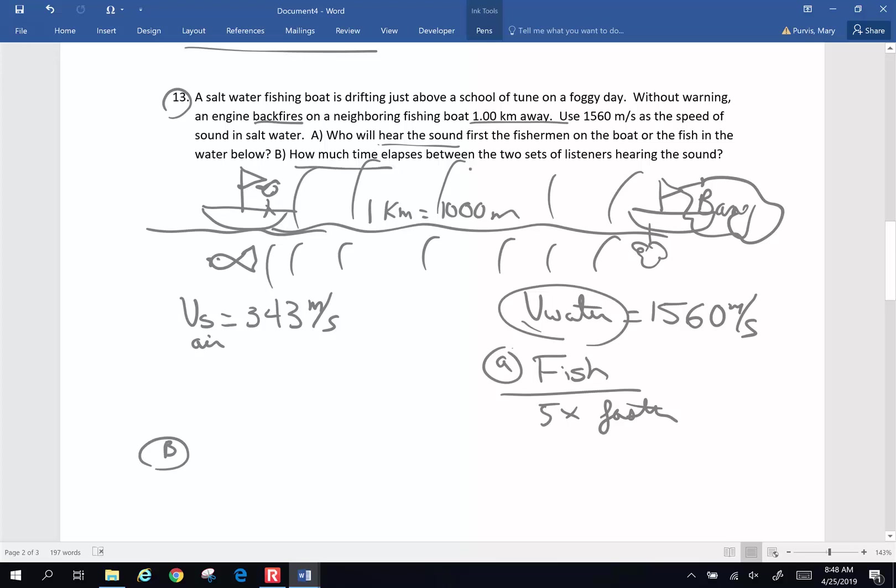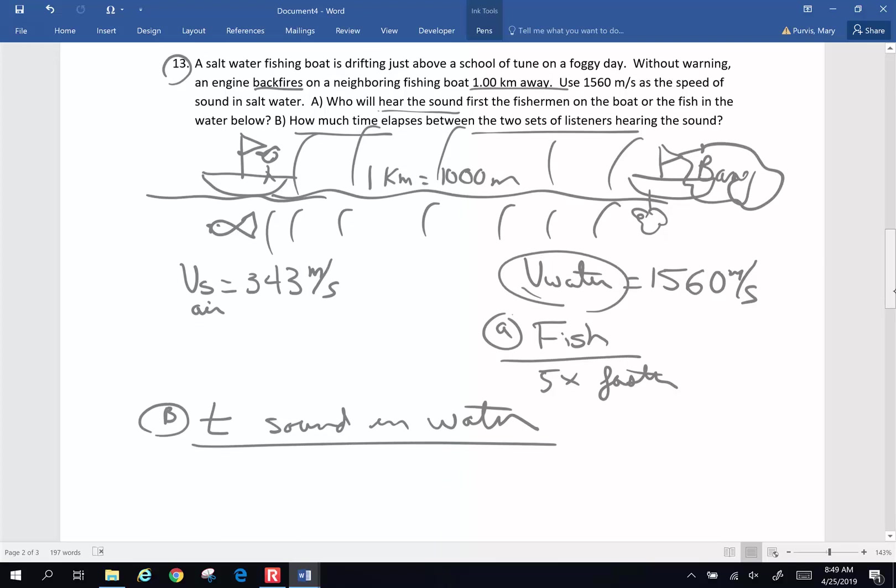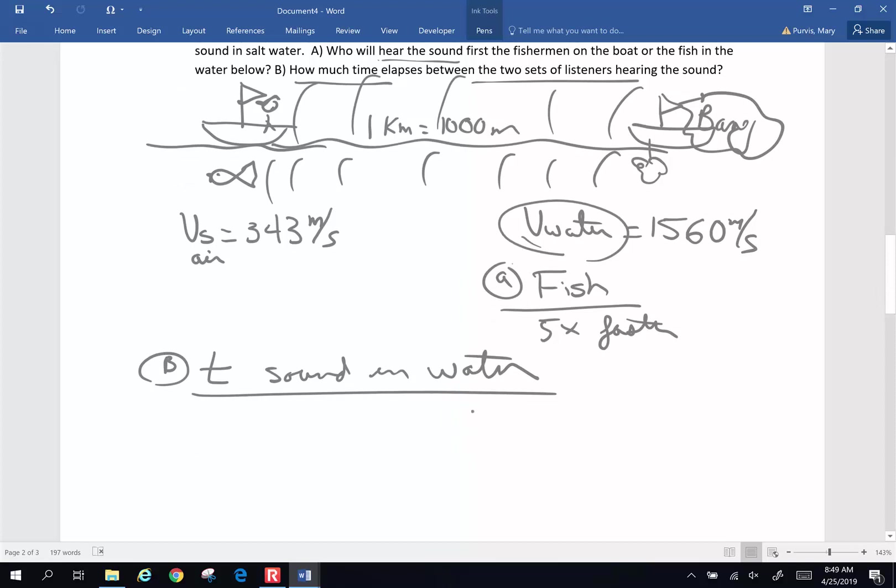How much time elapses between the two sets of listeners hear the sound? So I'm going to calculate the time for the sound to travel in water and then I'm going to calculate the time for the sound to travel in air and then we're going to subtract. So this is a straight velocity is displacement over time because sound is going to travel at a constant velocity in one medium.